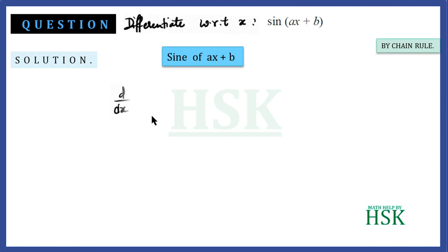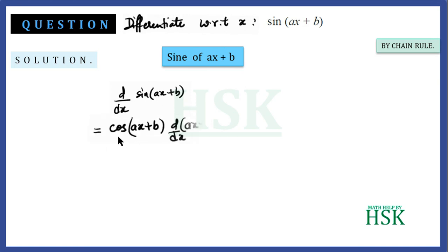So d/dx of sin(ax+b) is done as follows: since d/dx of sin(x) is cos(x), d/dx of sin(ax+b) equals cos(ax+b) multiplied by d/dx of (ax+b).